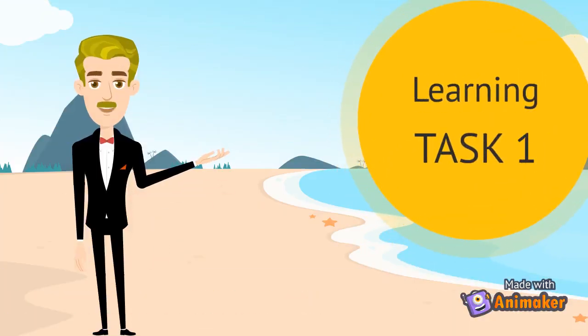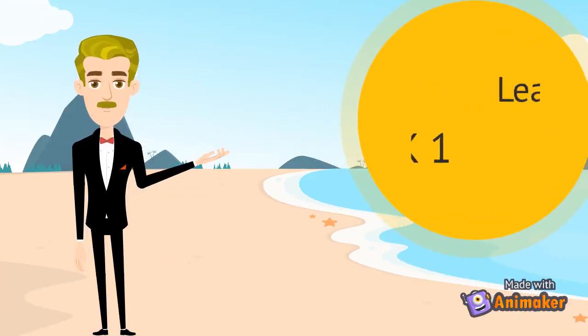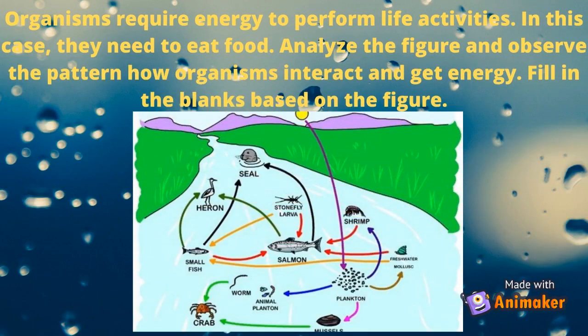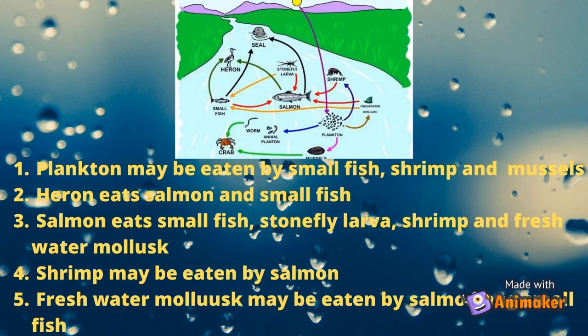Let's do learning task number one. Organisms require energy to perform life activities; in this case, they need to eat food. Analyze the figure and observe the pattern of how organisms interact and get energy. Fill in the blanks based on the figure. Number 1: Plankton may be eaten by small fish, shrimp, and mussels.